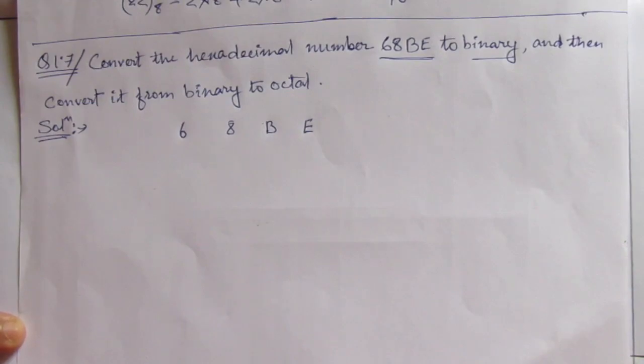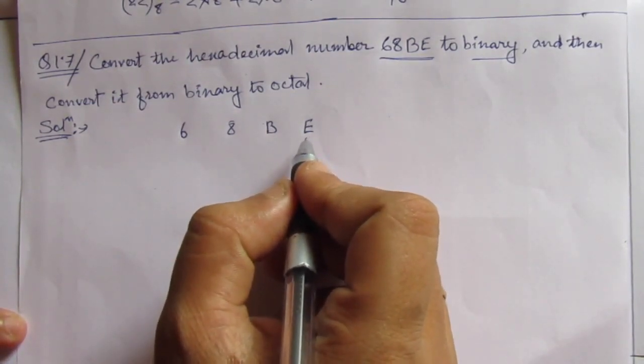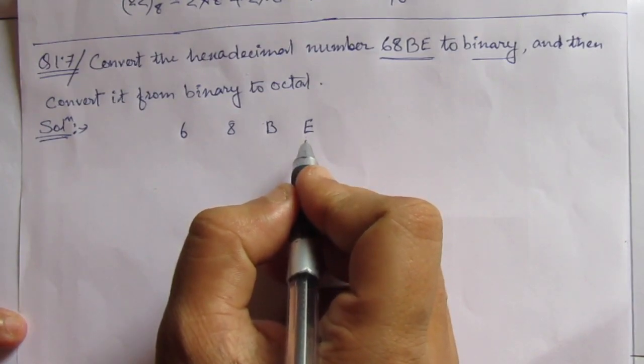What you have to do is convert each hexadecimal digit into a 4-bit binary representation.